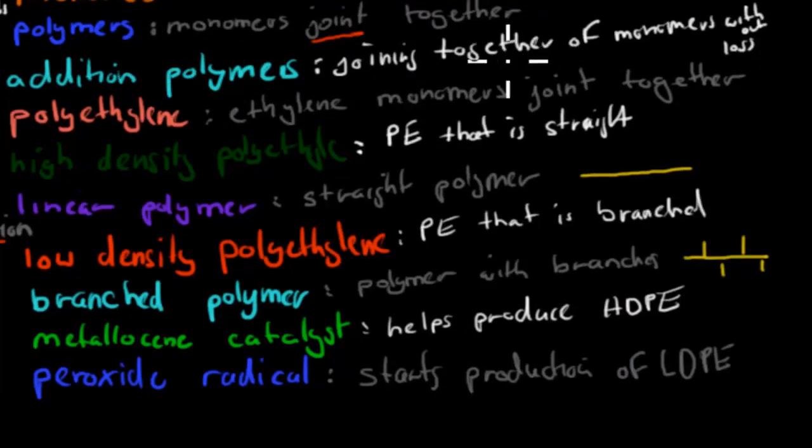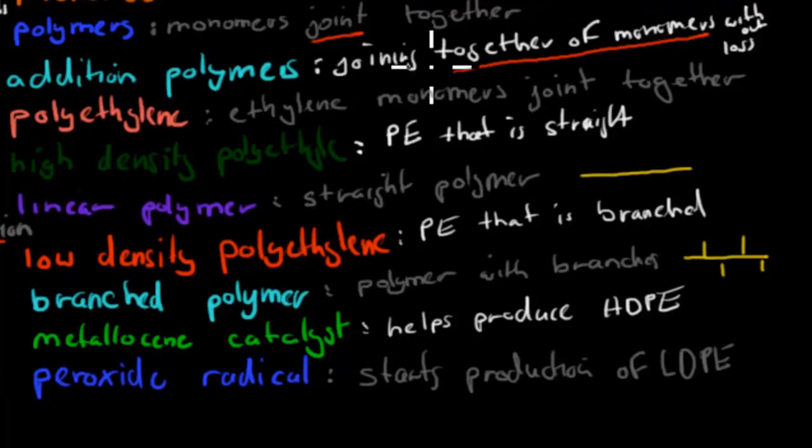An addition polymer is a joined together of monomers, but also without a loss. You don't lose anything. Condensation polymer, which will come in the next chapter, you lose a water molecule when they join together. Whereas an addition polymer, you have nothing lost, only stuff added.